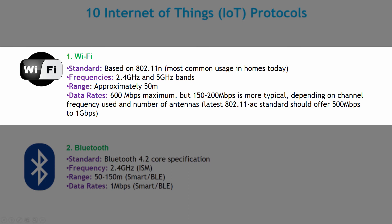A series of Wi-Fi development boards are available on the internet — you can find them from Texas Instruments, STMicroelectronics, or other manufacturers. The frequency range of Wi-Fi is 2.4 GHz, and 5 GHz bands are also available. The range of Wi-Fi is approximately 50 to 100 meters, and the data rate is around 600 Mbps maximum, but generally 150–200 Mbps is more typical depending on the channel frequency and number of antennas used.